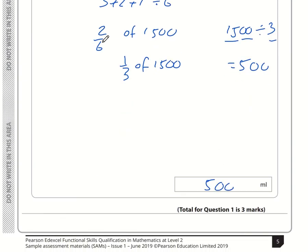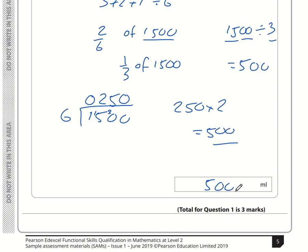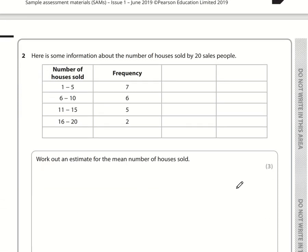If you are using the fraction 2 sixths, then what you would need to do is divide 1500 by 6 and then multiply the answer by 2. How many 6's go into 1500? 15 divided by 6 is 2 with a remainder of 3. 30 divided by 6 is 5. So we get 250. Now multiply that by 2. 250 times 2 is 500. Either way, we get the same answer.